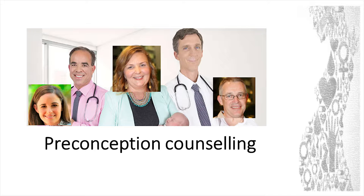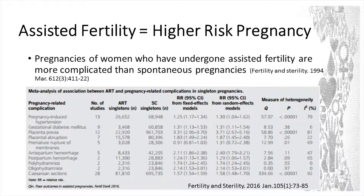When they turn up for their preconception counselling or for assisted fertility, there's an opportunity to look at this high-risk population to see what we can do. The pregnancies of women who've undergone assisted fertility are more high risk, more complicated than spontaneous pregnancies. This is a complex table — I don't necessarily need you to see very much of it, but what I need you to see is there are a lot of complications, and the relative risk is increased in this particular population. I'm going to talk specifically about a few of those.